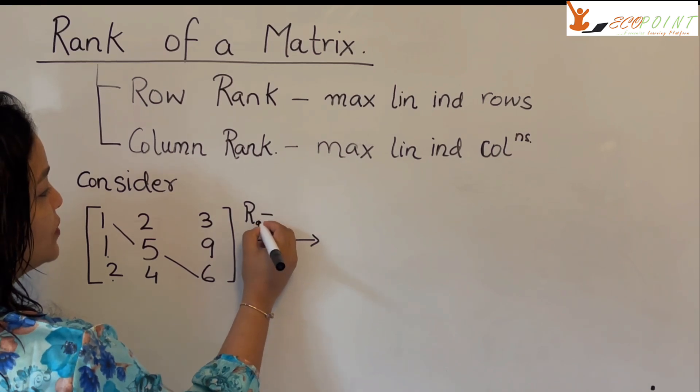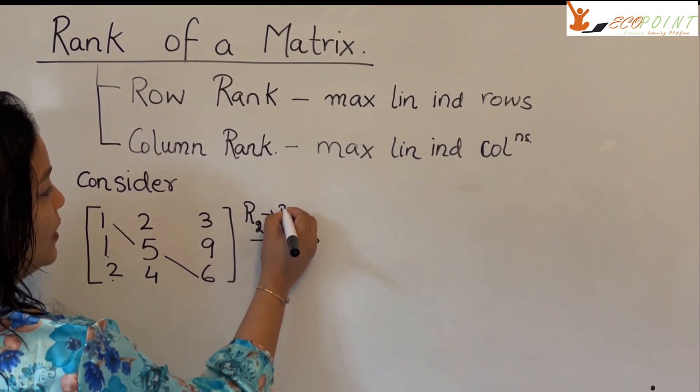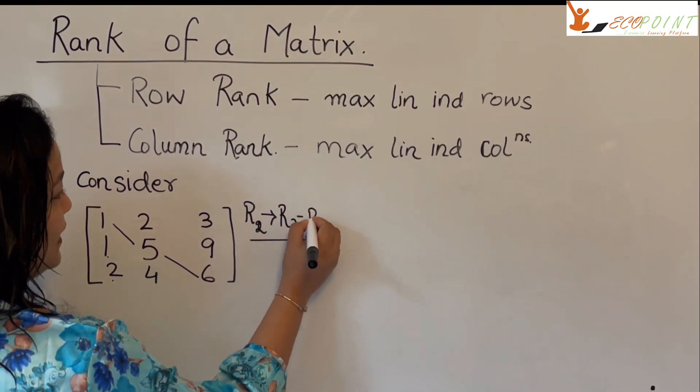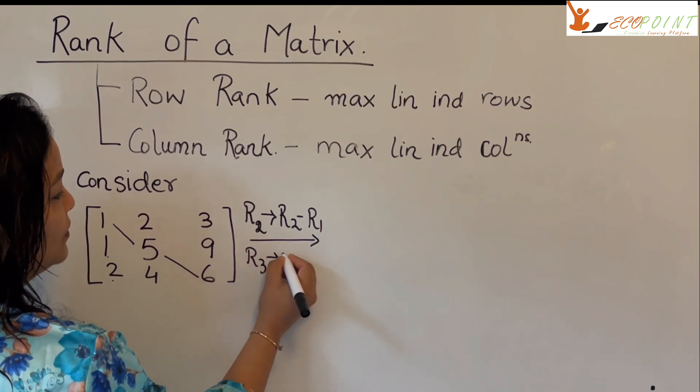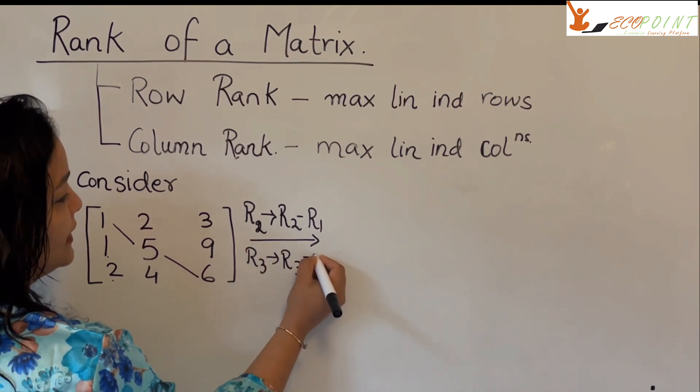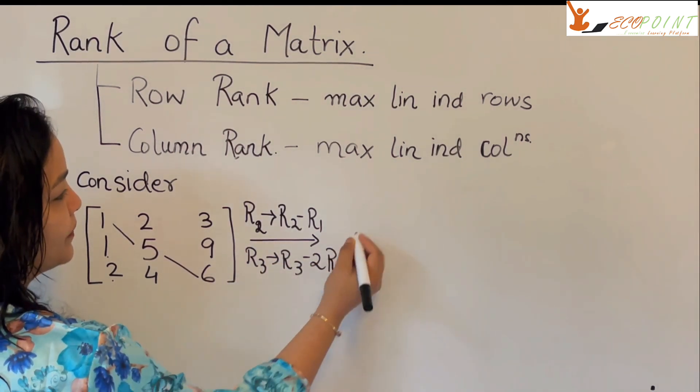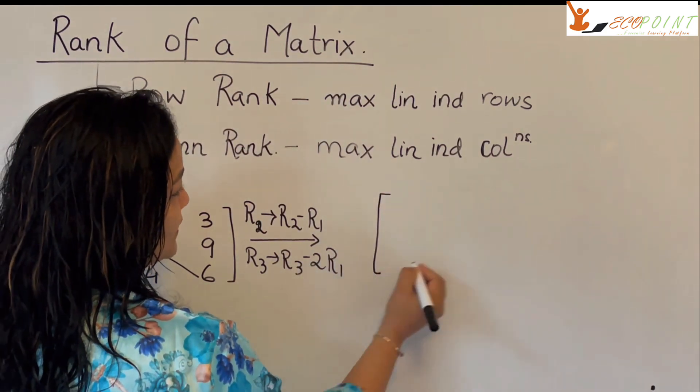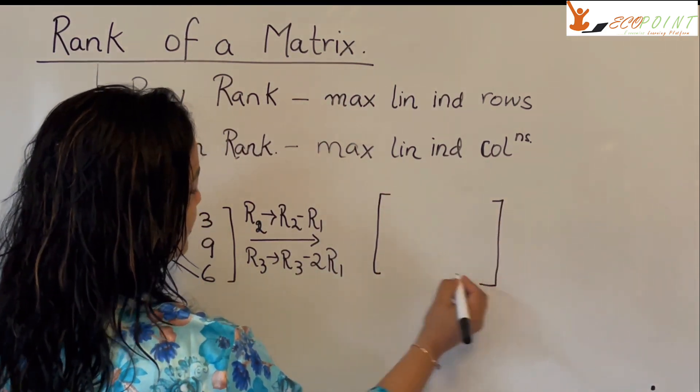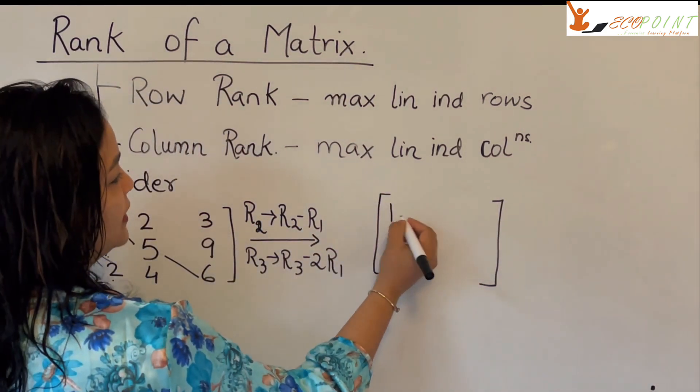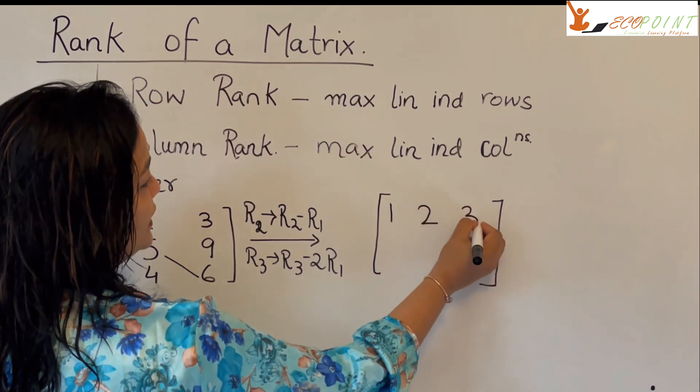R1 goes, R2 goes to R2 minus R1 and R3 goes to R3 minus twice of R1 which gives us the following matrix. So, 1, 2, 3 as it is.